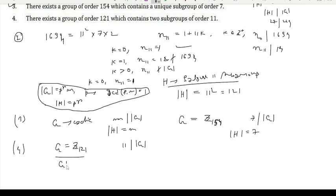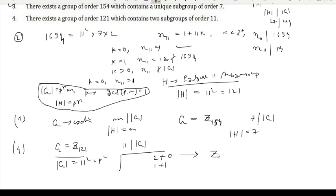This group is of order 11² = p², and any group of order p² is abelian. We can find all abelian groups of order p². Since there are two partitions of 2 — namely 2 and 1+1 — the corresponding abelian groups are Z₁₂₁ and Z₁₁ ⊕ Z₁₁. Probably Z₁₁ ⊕ Z₁₁ will work because it may have two subgroups of order 11.